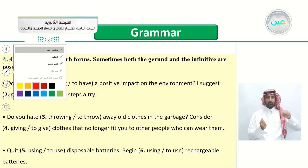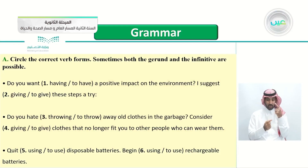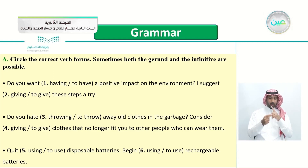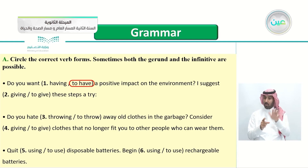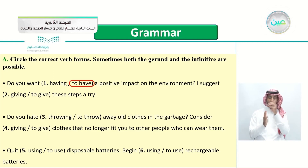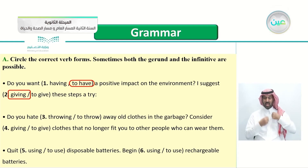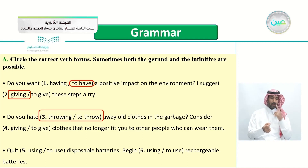Exercise A: circle the correct verb forms — sometimes both are possible. Number 1: 'Do you want having or to have a positive impact on the environment?' — want comes before the infinitive: 'to have.' Number 2: 'I suggest giving these steps a try' — suggest comes before the gerund. Number 3: 'Do you hate throwing or to throw away old clothes?' — both are correct.